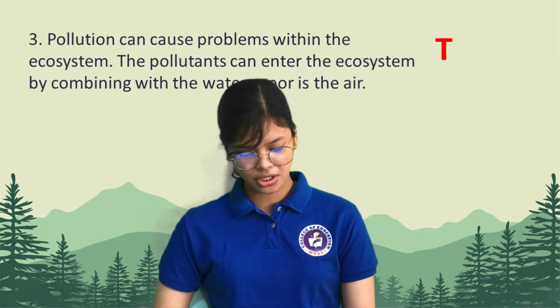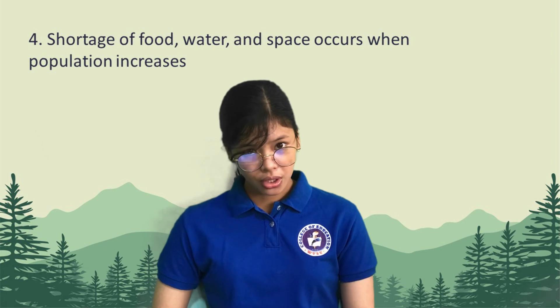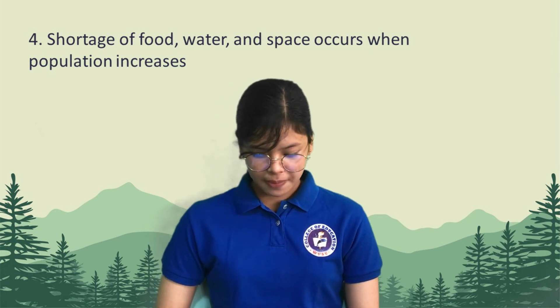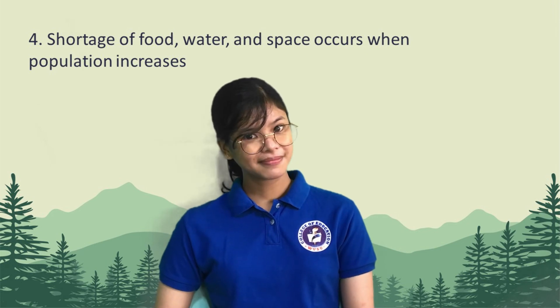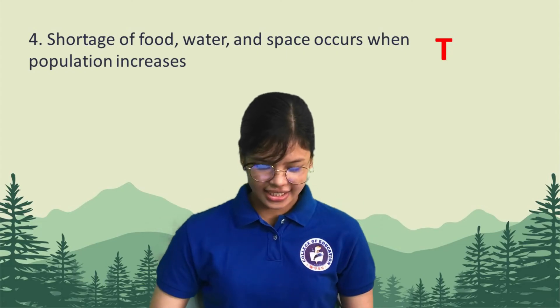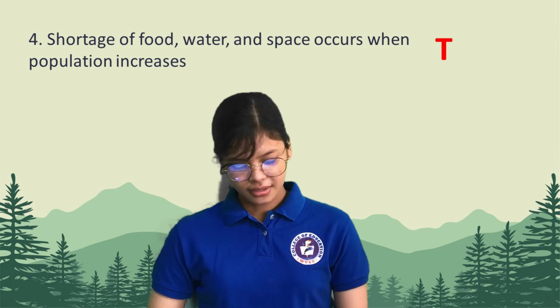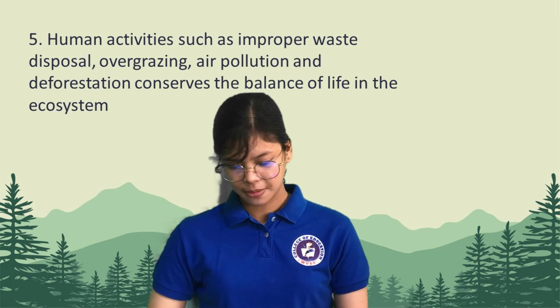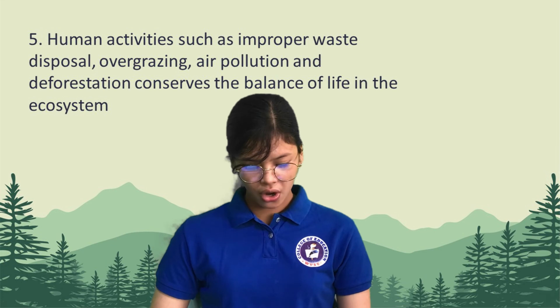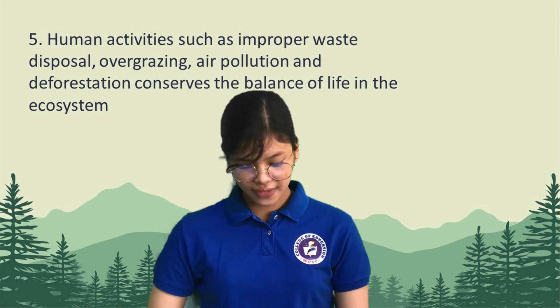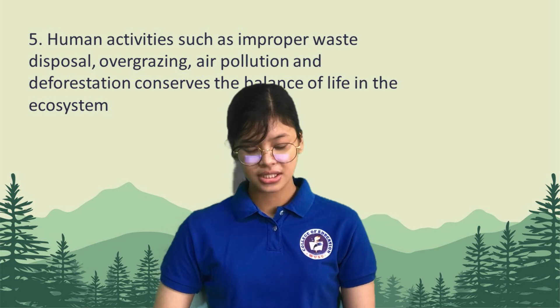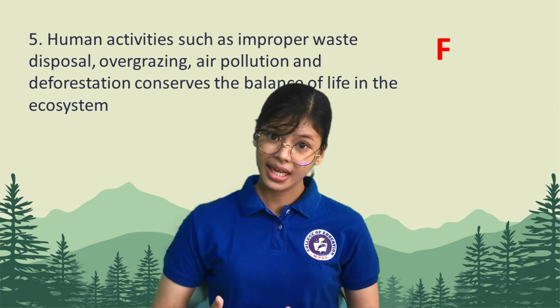Now, let's go to the fourth question. Shortage of food, water, and space occurs when population increases. Can someone give me the answer? True. That is right. And the last one: human activities such as improper waste disposal, overgrazing, air pollution, and deforestation conserve the balance of life in the ecosystem. This is false — it actually disrupts the ecological balance of the ecosystem.